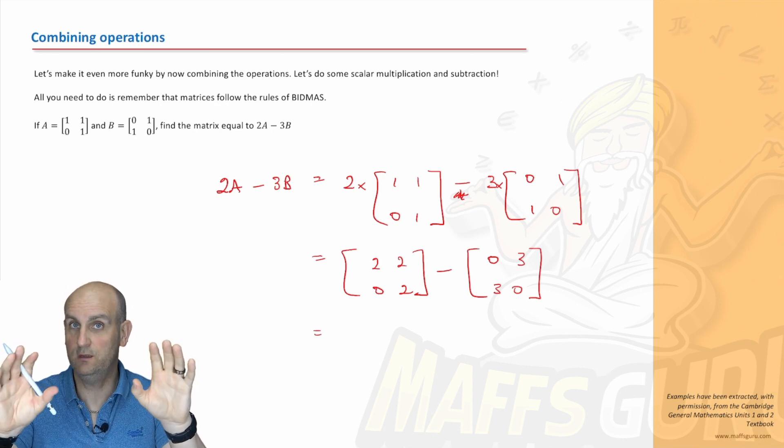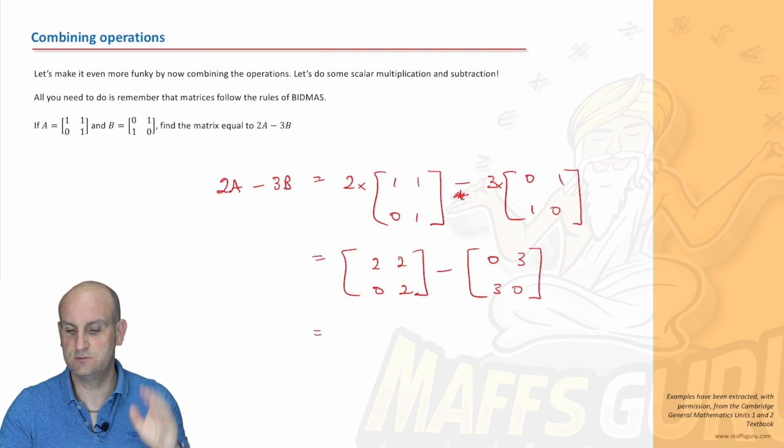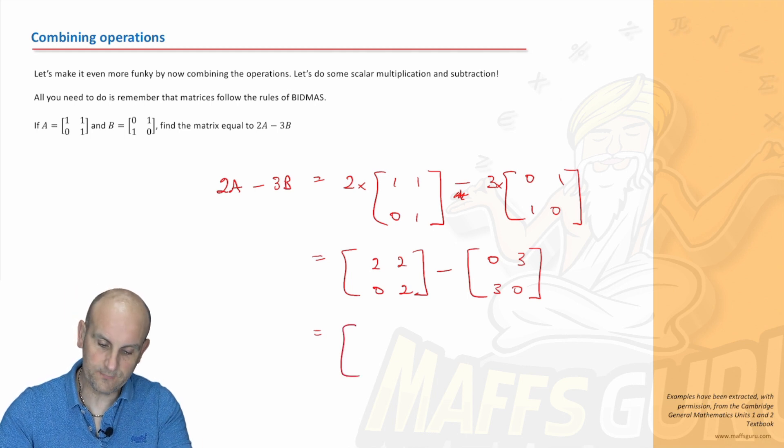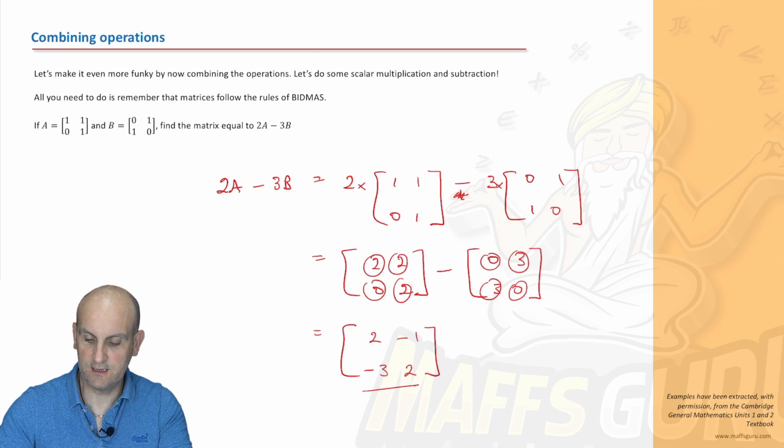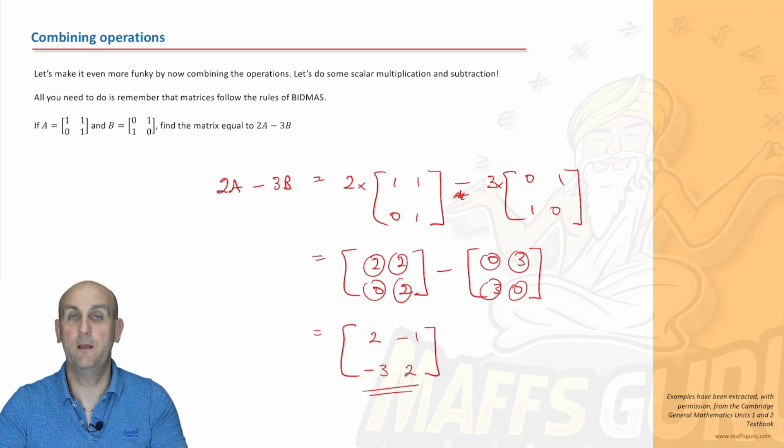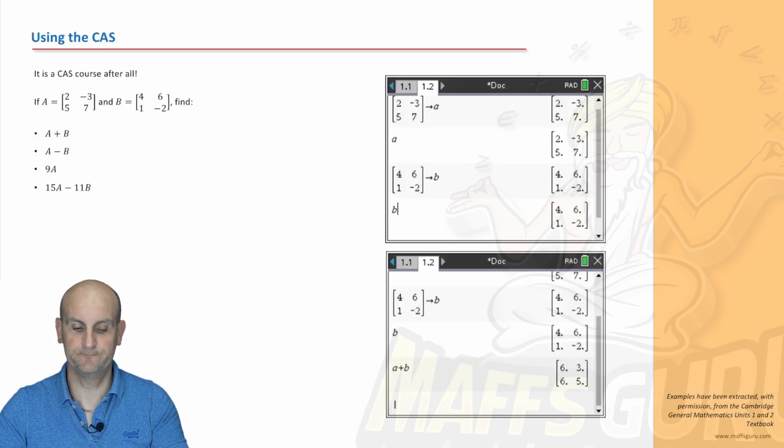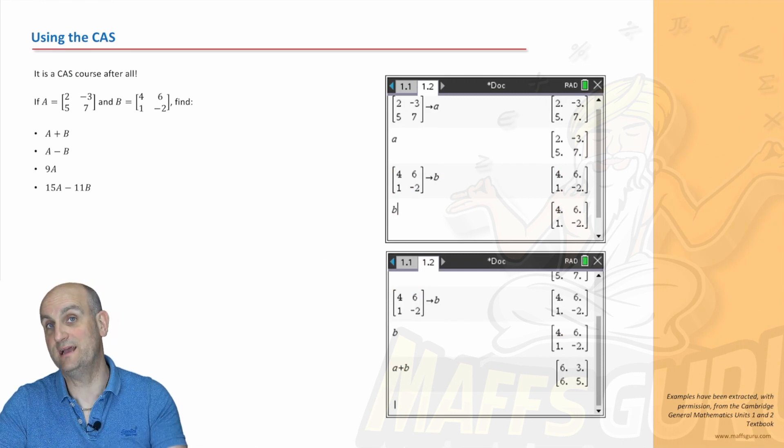Now I'm just going to subtract them. Are they the same order? Yes, they are. So I'm just going to subtract elements. So 2 minus 0 is 2, 2 minus 3 is minus 1, 0 minus 3 is minus 3, and 2 minus 0 gives me 2. And ka-ching, ladies and gentlemen, there is 2A minus 3B.